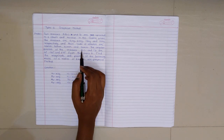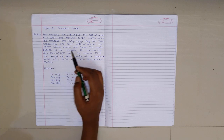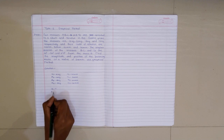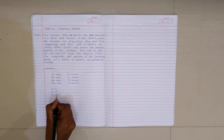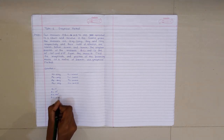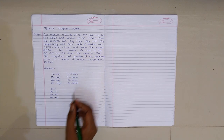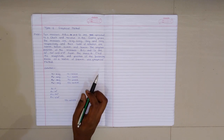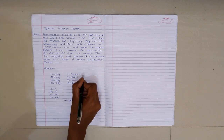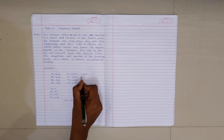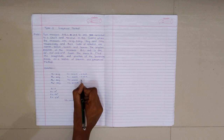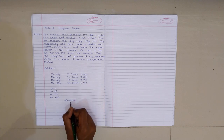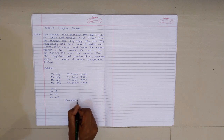The angular positions of masses A, B, C and D: θ1 = 0 degrees, θ2 = 60 degrees, θ3 = 135 degrees, and θ4 = 270 degrees. The balancing mass is at a radius of 100 mm. Converting all radii to meters: R1 = 0.04 m, R2 = 0.05 m, R3 = 0.06 m, R4 = 0.03 m, and the balancing radius = 0.1 m.